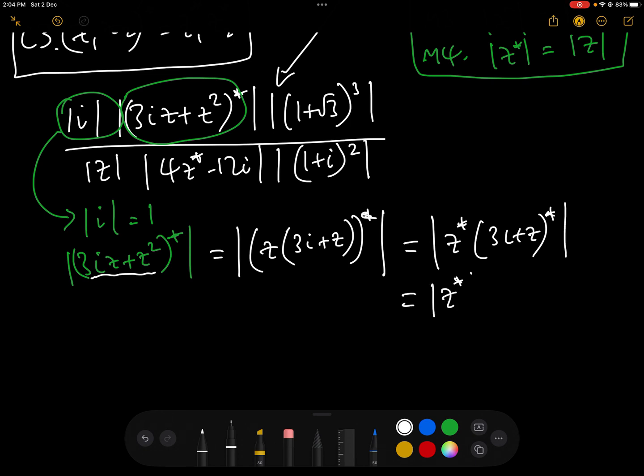we can write that as mod z conjugate mod 3i add z conjugate. And then by modulus rule 4, we can write that as modulus of z times modulus of 3i add z conjugate. Okay, so let's leave that one for now.